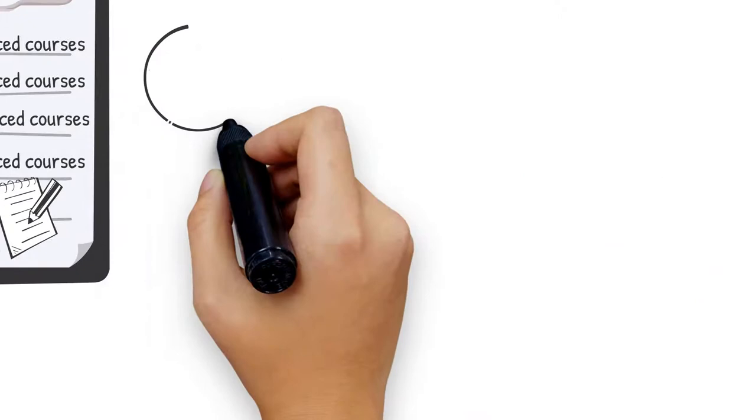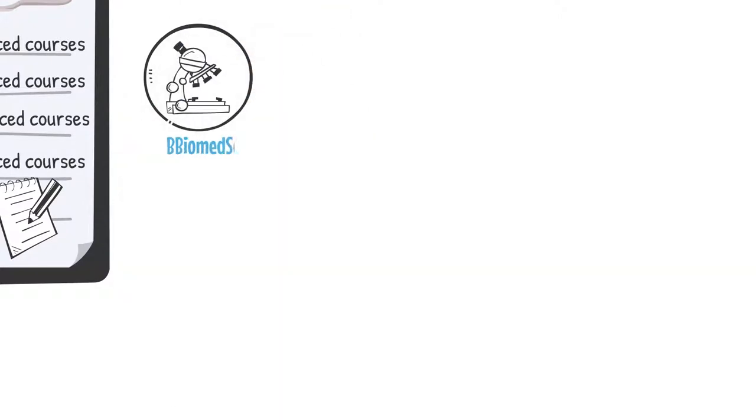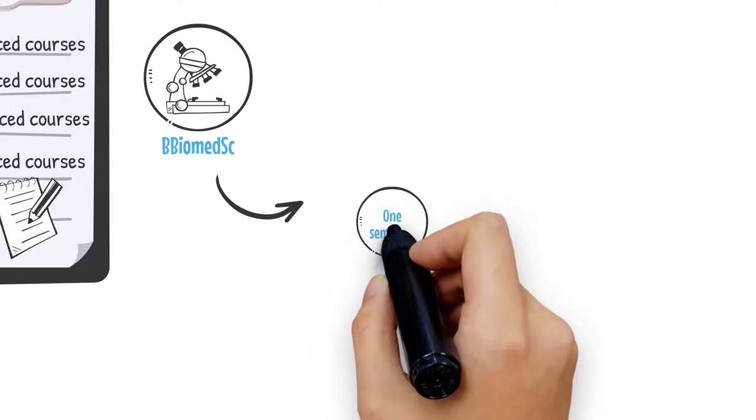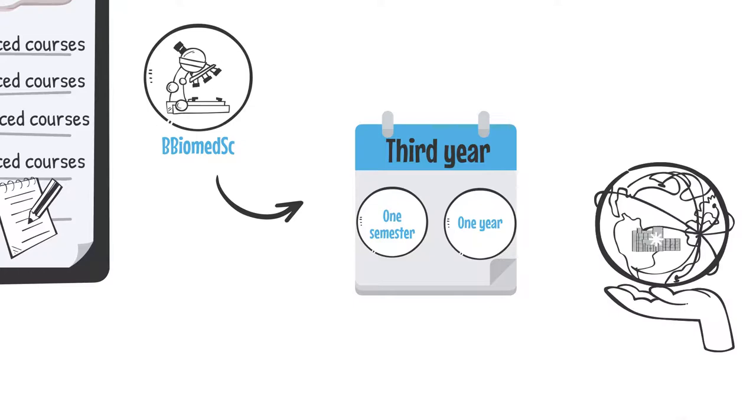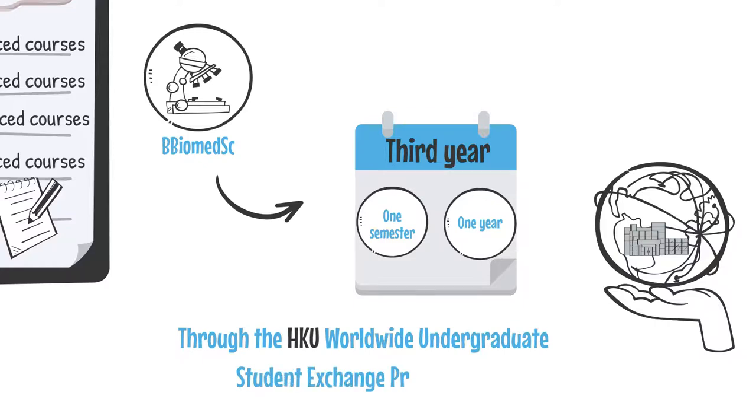Besides these articulation programs, many Bachelor of Biomedical Sciences students also choose regular exchange for either one semester or one year during their third year at many of the world's leading universities through the Hong Kong U Worldwide Undergraduate Student Exchange Programme.